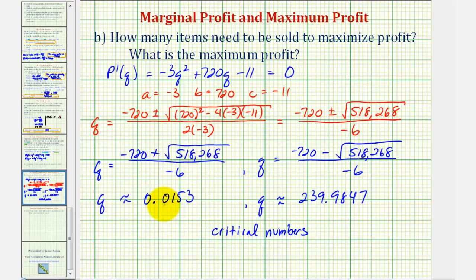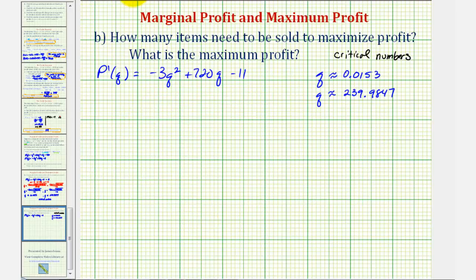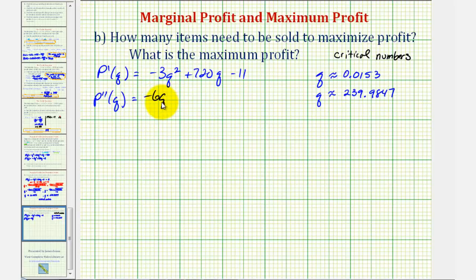Let's use the second derivative test to determine the concavity at these values of q. The second derivative, or p double prime of q, would be equal to negative 6q plus 720.